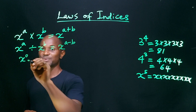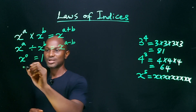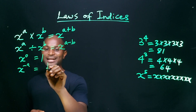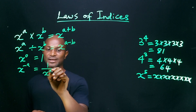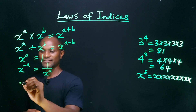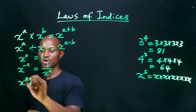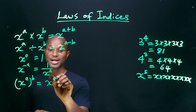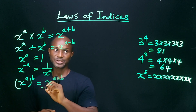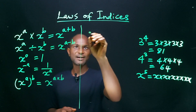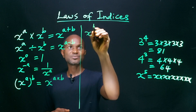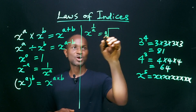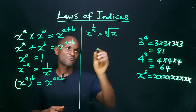Third: any number raised to power zero is 1. Fourth: any number raised to power minus a will be equal to 1 divided by that same number raised to power a. Fifth: any number raised to power a, raised to power b, is equal to that same number raised to power a multiplied by b. Sixth: any number raised to power 1 over a is equal to the a-th root of that number.